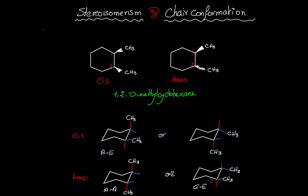However, you should not be thinking in terms of axial and equatorial bonds when answering a question about cis and trans conformations. You should be thinking: same side for cis, and opposite sides for trans.